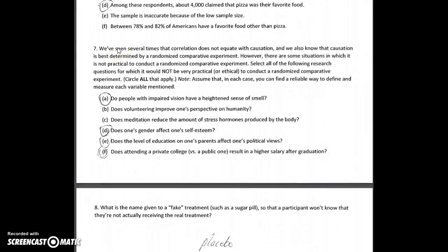For question seven, the key is to know whether you can randomly assign to the treatment. First you figure out what the treatment is, then ask if it's practical or ethical to assign that treatment. Here, one's level of vision — it would be unethical to impair someone's vision, especially permanently. You could cover someone's eyes with a blindfold, but if we're really looking for a heightened sense of smell, we wouldn't expect that to kick in for quite some time, and it's impractical to get people to voluntarily impair their vision for a year or more. Gender is not practical to assign someone to a gender and force them to fully take on that gender.